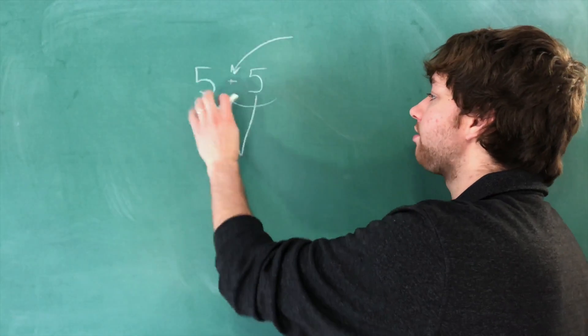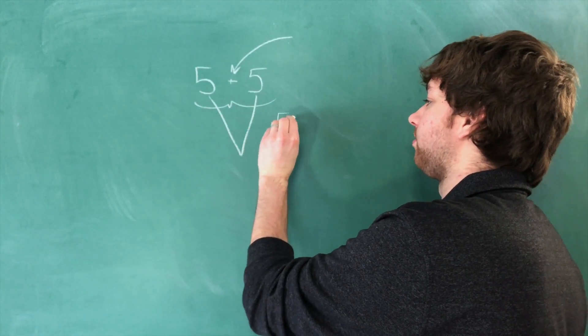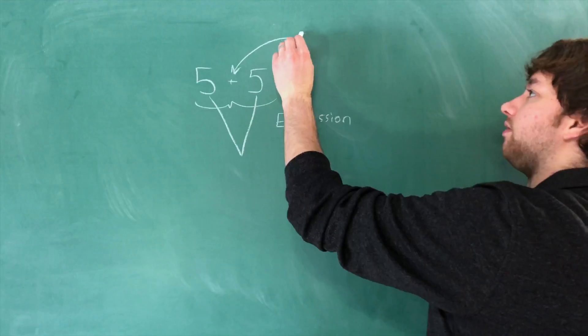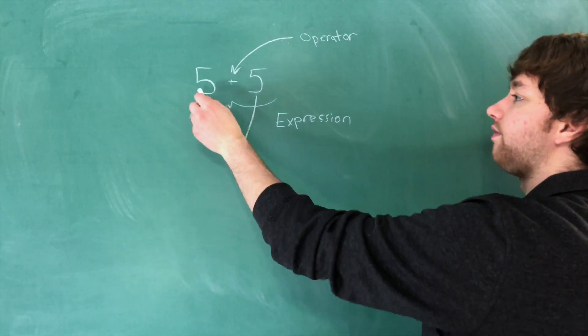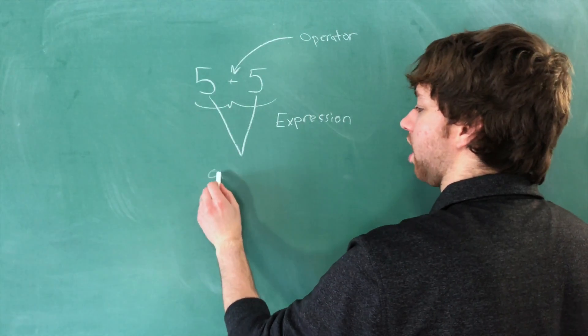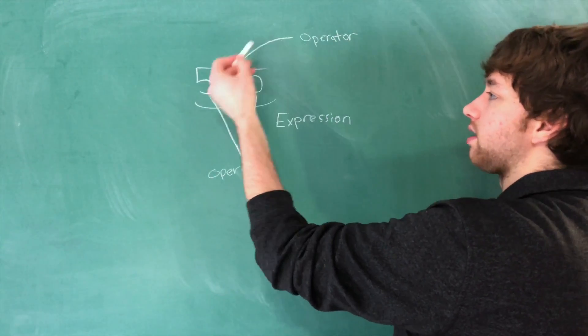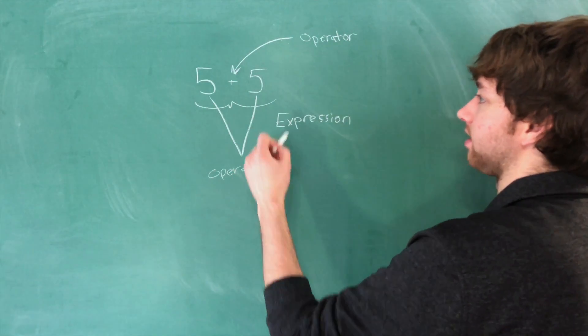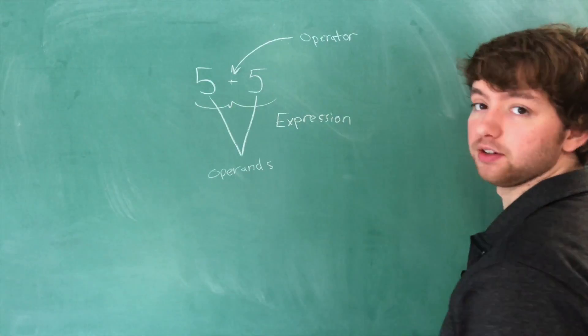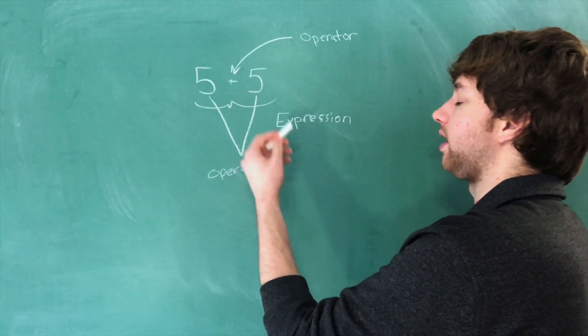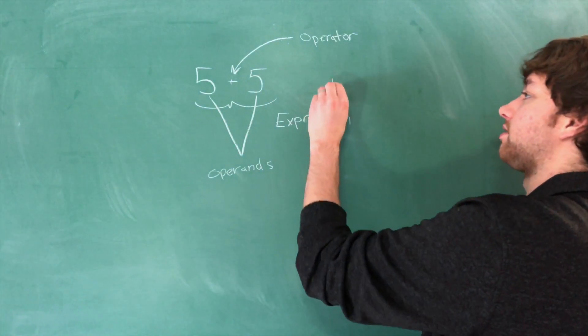The answer: so the entire thing is called an expression. The plus sign is an example of an operator, and the 5's are what are known as operands. The operator does something with the operands—in this case, it adds them together. An expression gets evaluated to some value, in this case 10.